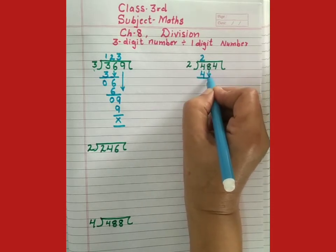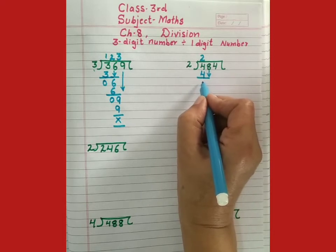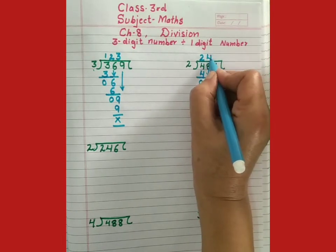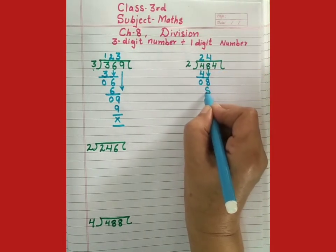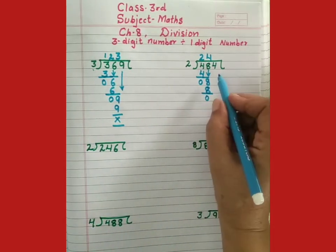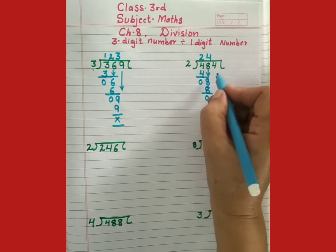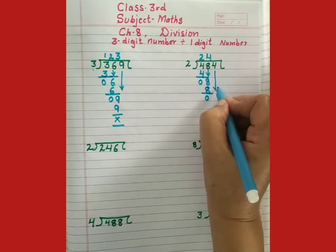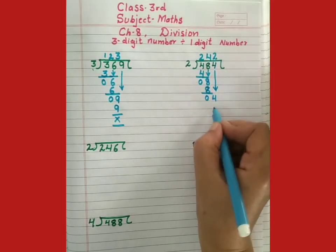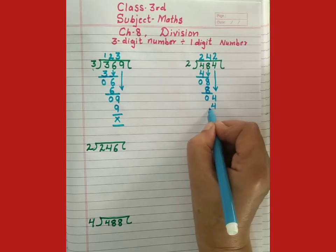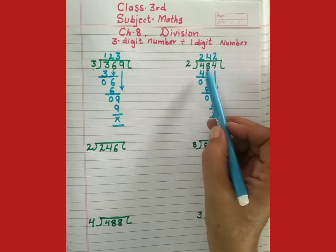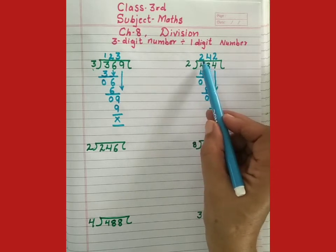Now, we will bring down 8. 2 fours are 8. 8 minus 8 subtract karte to 0. Now we will bring down 4. 2 twos are 4. So, students, when we divide 484 by 2, quotient is 242.